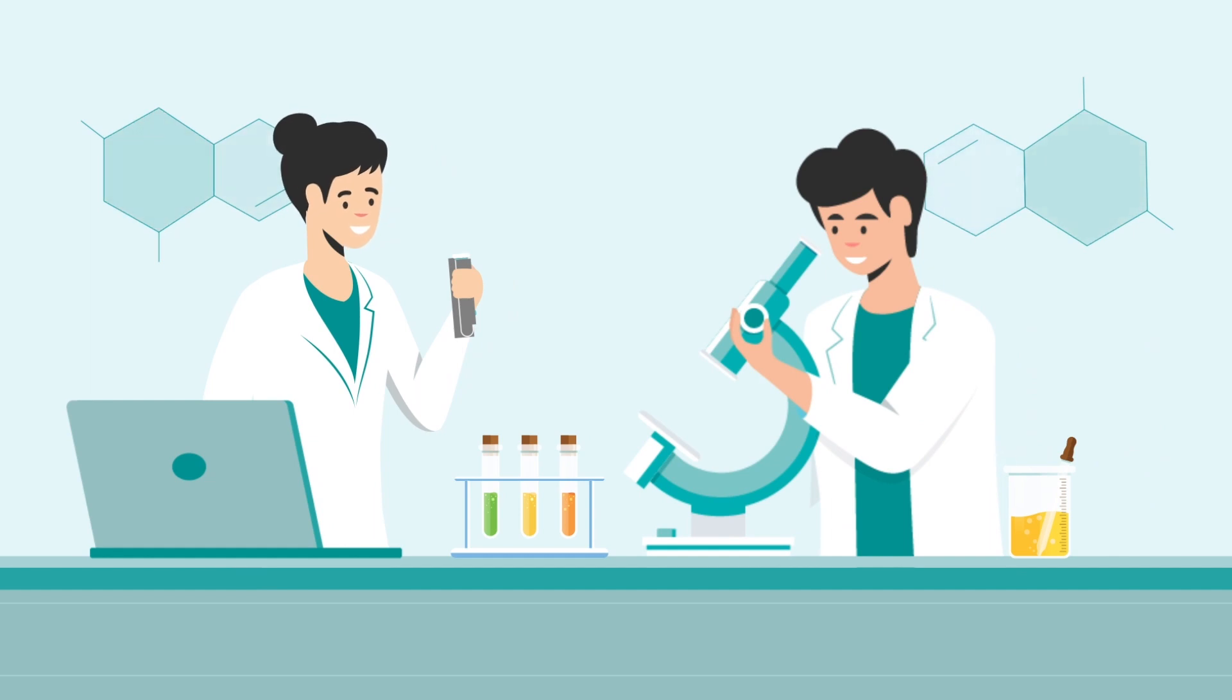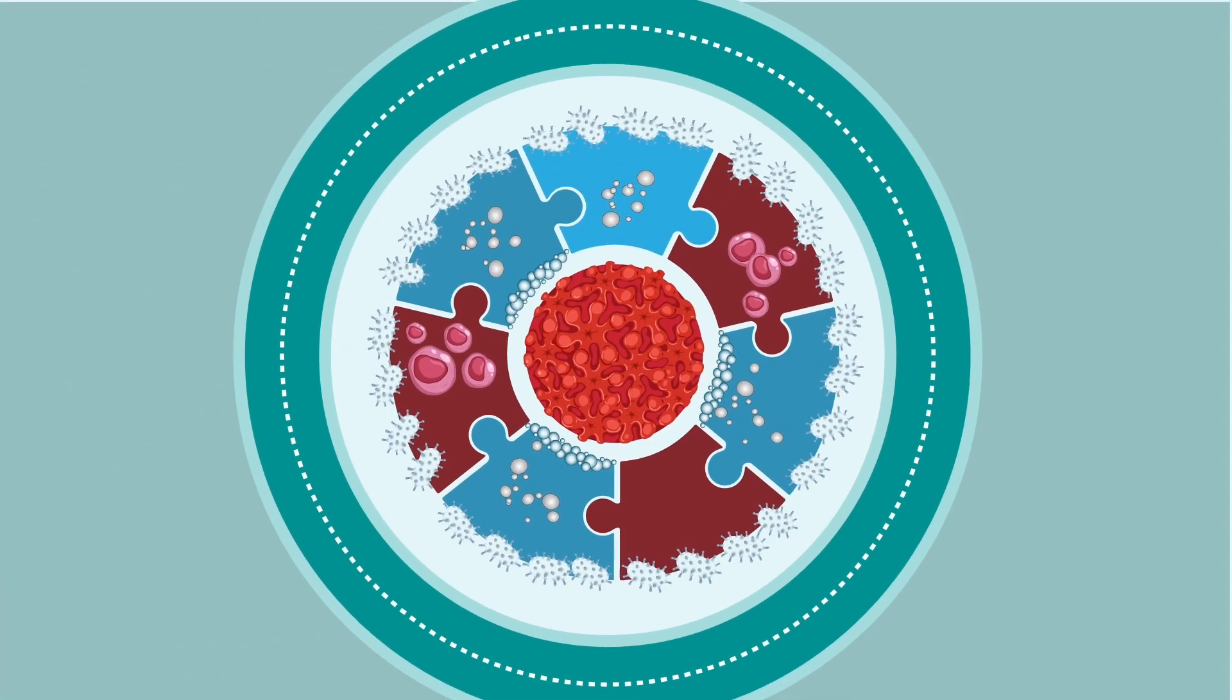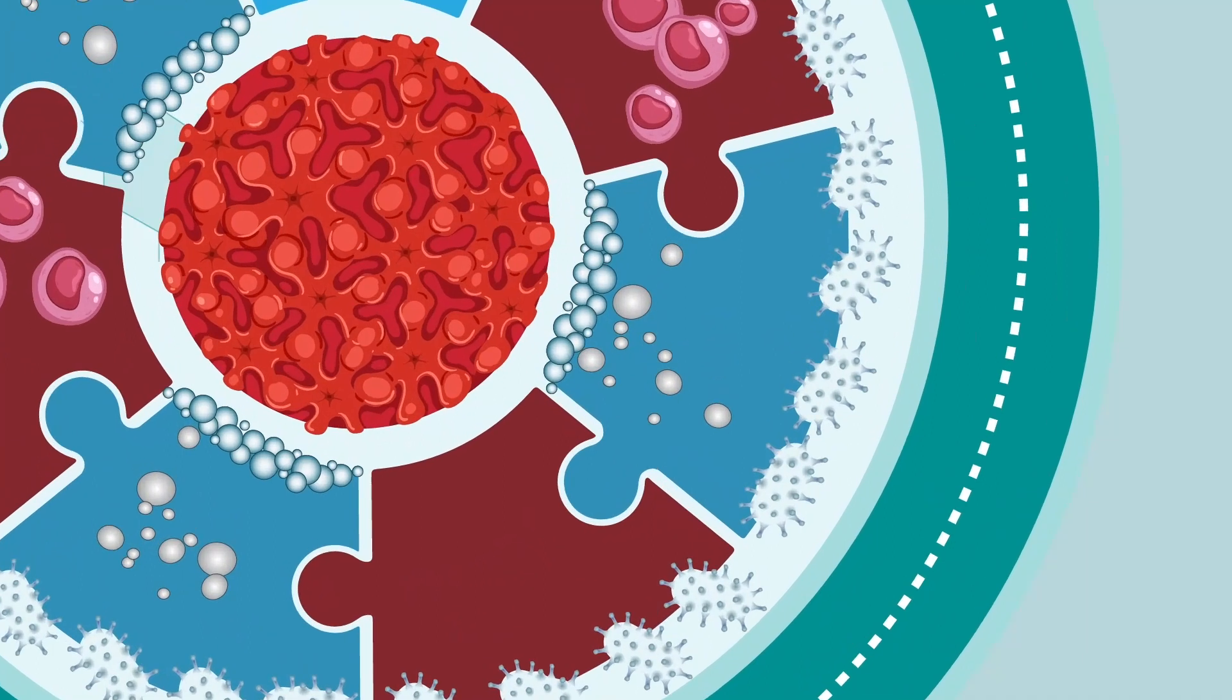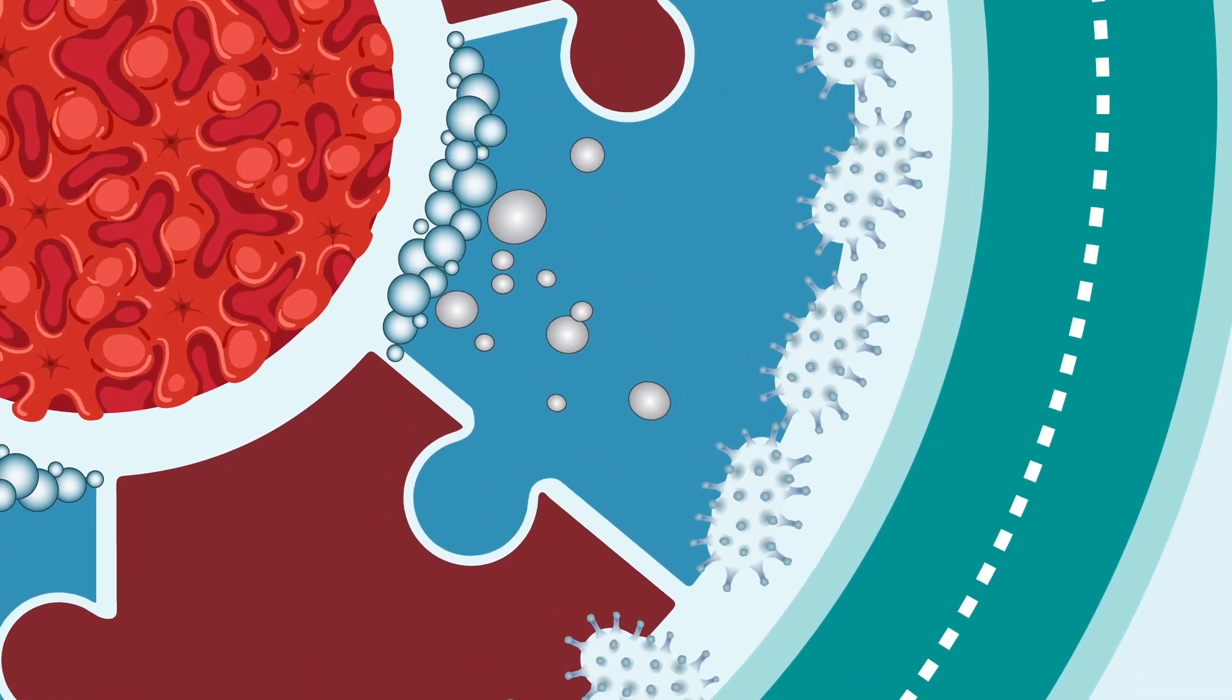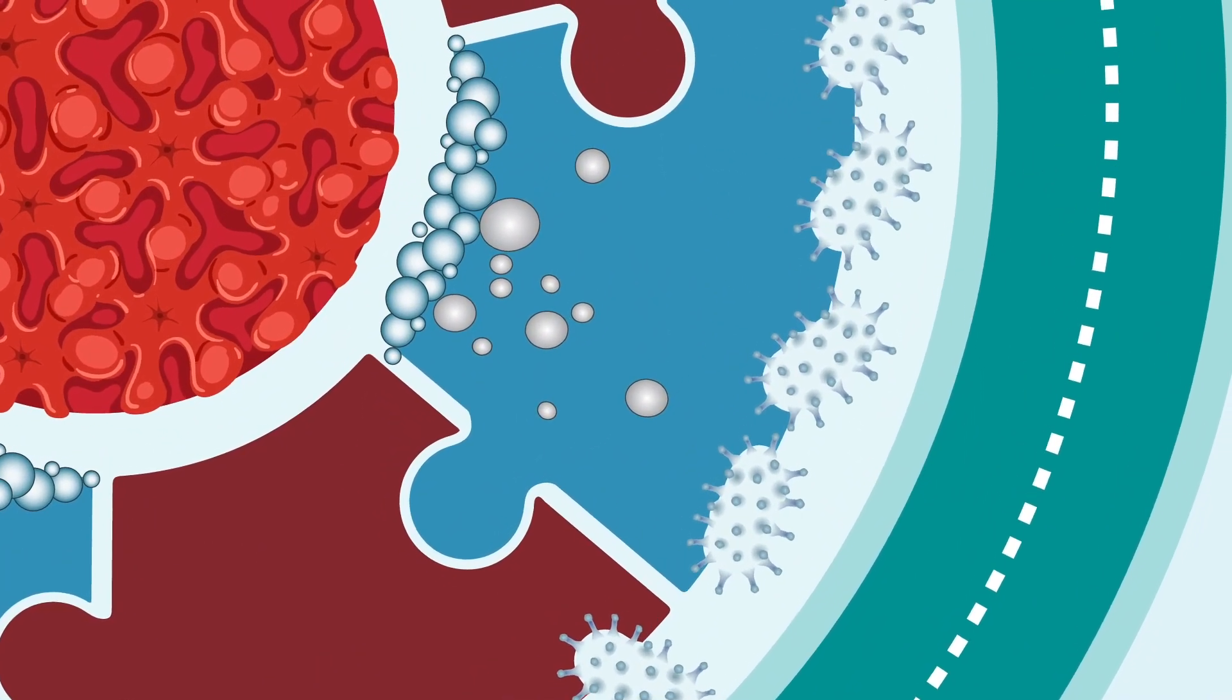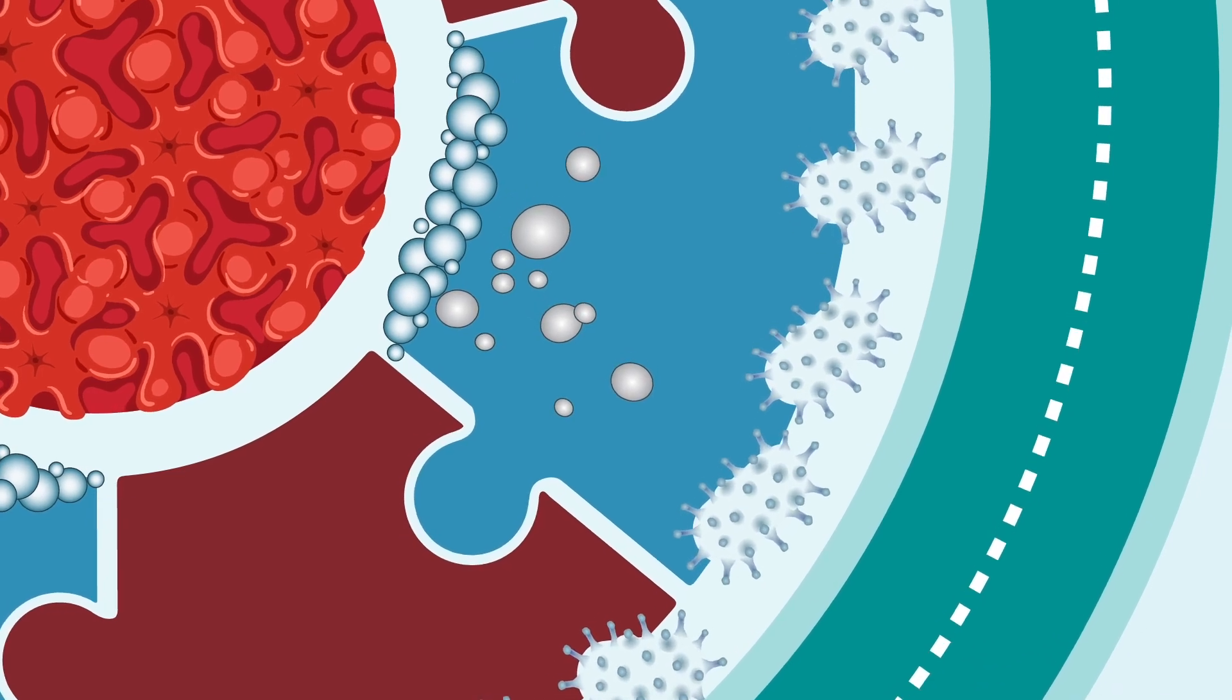So instead of using the entire virus, RPV vaccines are made using just a tiny part of the virus which is not enough to make us sick, but this part is usually used by the virus to get inside our cells.